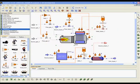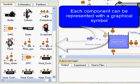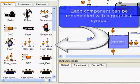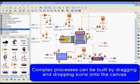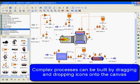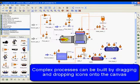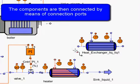Let's take a look at the palette of symbols. Each component can be represented with a graphical symbol. Complex processes can be built by dragging and dropping icons onto the canvas. The components are then connected by means of connection ports as you can see.